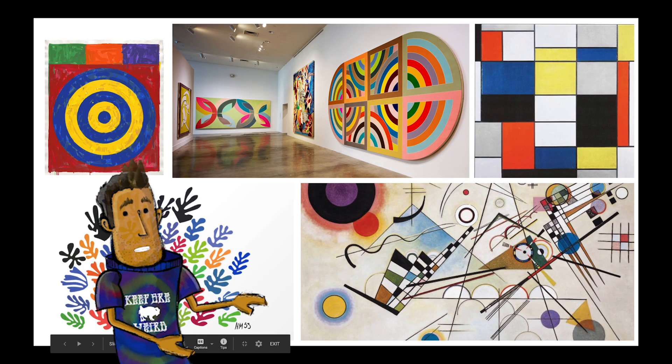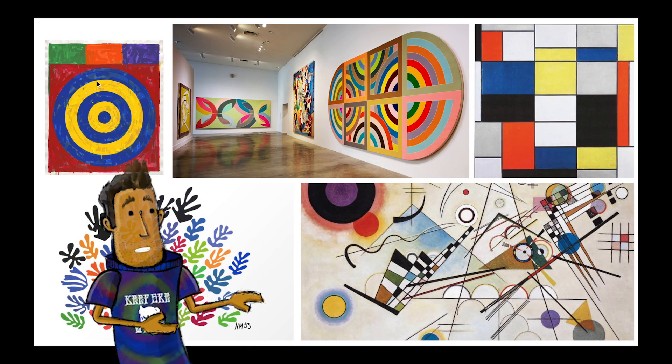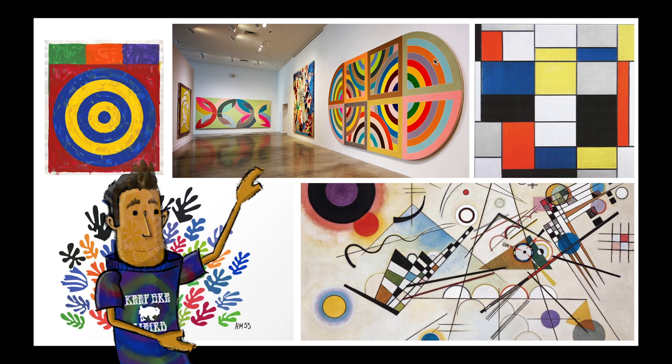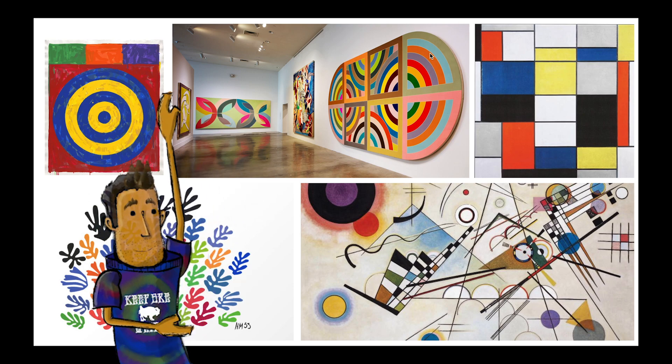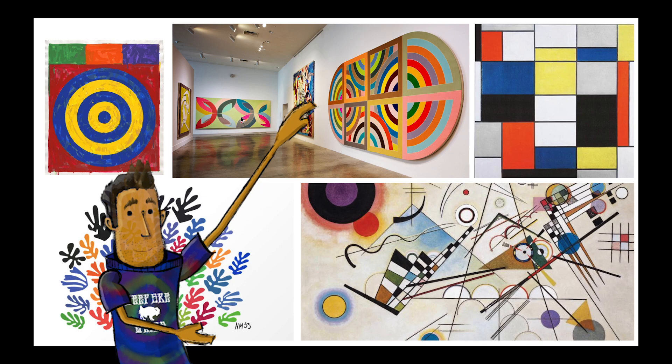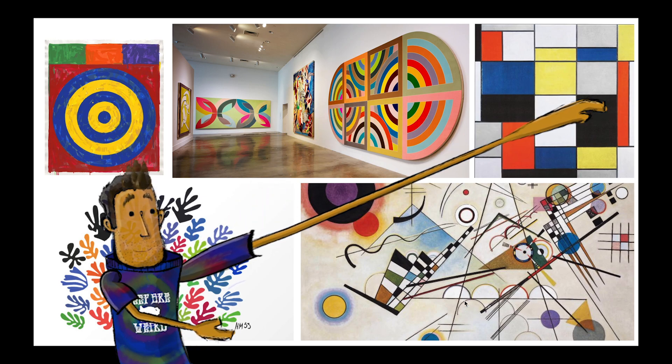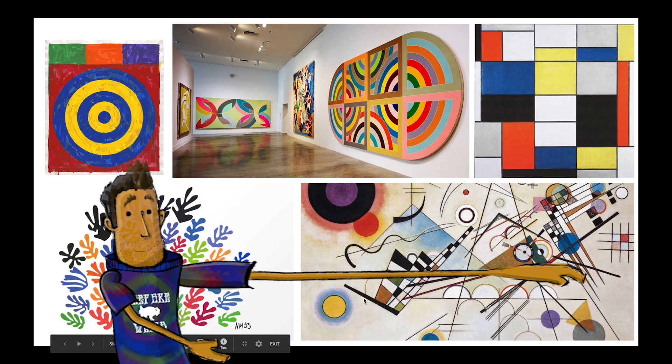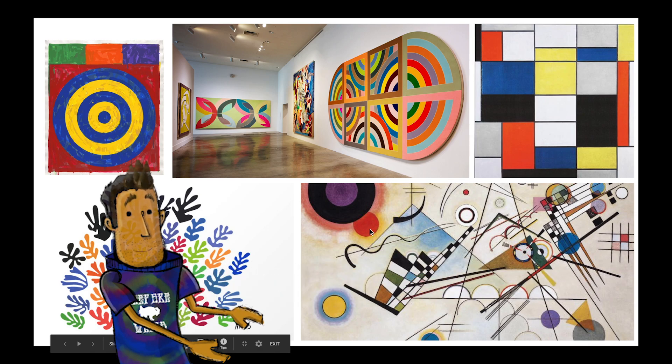Okay, so here are examples of how professional artists use shapes to make different pieces of art. There's Jasper Johns, Frank Stella created a lot of different shapes, Pierre Mondrian, and then Wassily Kandinsky is a master of geometric shapes.